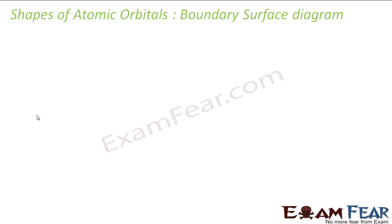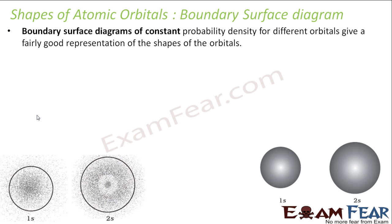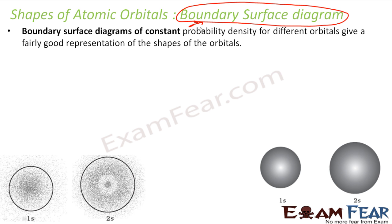The shapes of atomic orbitals are just mathematical functions — they do not exist in reality. But if you want to understand them, you can draw a boundary surface diagram. Just like in geography, we have contour diagrams and lines of latitude and longitude — these do not exist physically. Similarly, orbitals are just diagrams we create to make chemistry easier to understand.